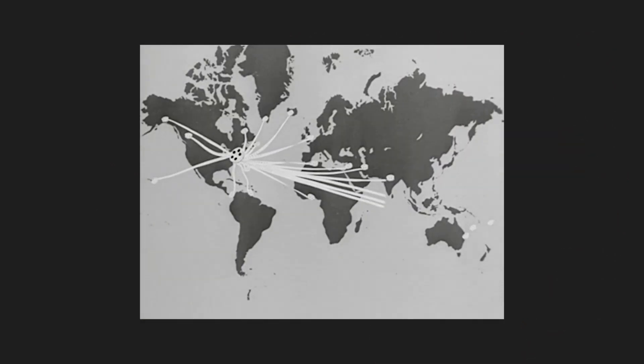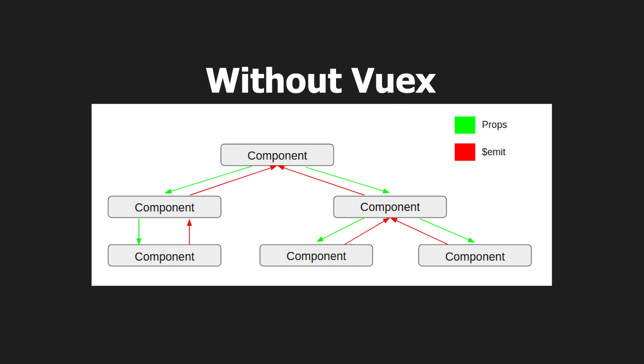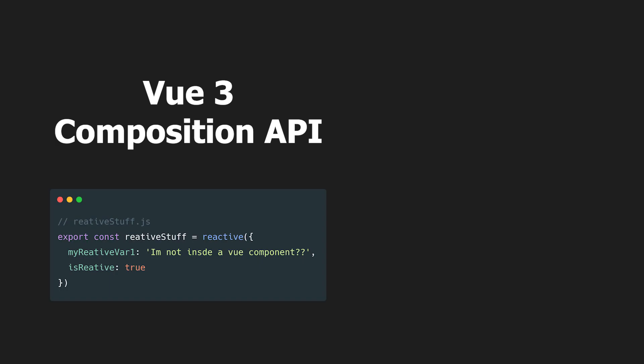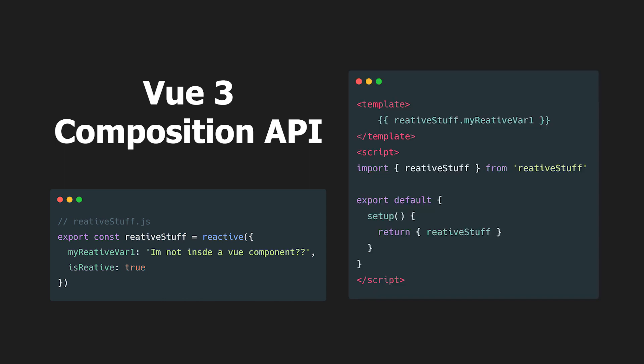The main reason Vuex exists is to allow a global reactive state in your Vue application. Without it, you could only share the local component state by passing props down to a child component and using events for passing data back to the parent. Using Vuex instead provides many benefits like simplifying the flow of data as your application grows in complexity. The new Composition API allows you to create independent reactive variables outside of a component and in fact outside of the Vue application.